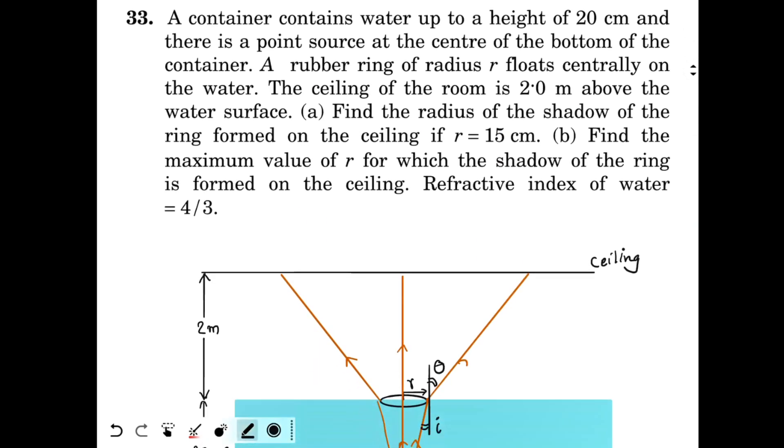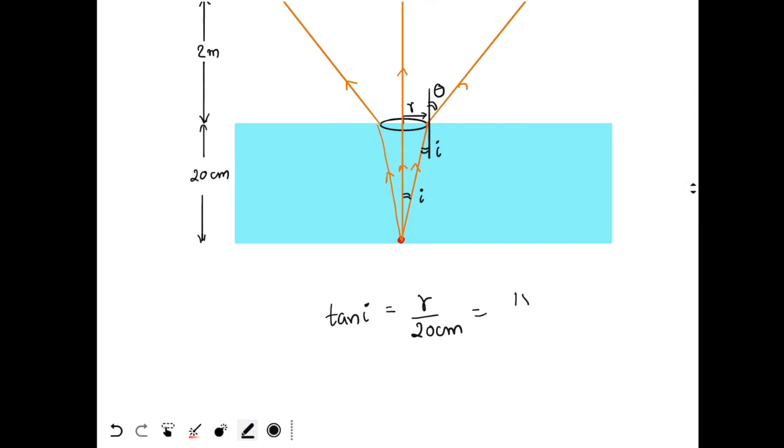So tan I equals radius by 20 cm. Radius is given to be 15 cm. So 15 by 20 so that is 3 by 4. That means I, tan I is 3 by 4, means I will be 37 degrees. So sin I will be 3 by 5.